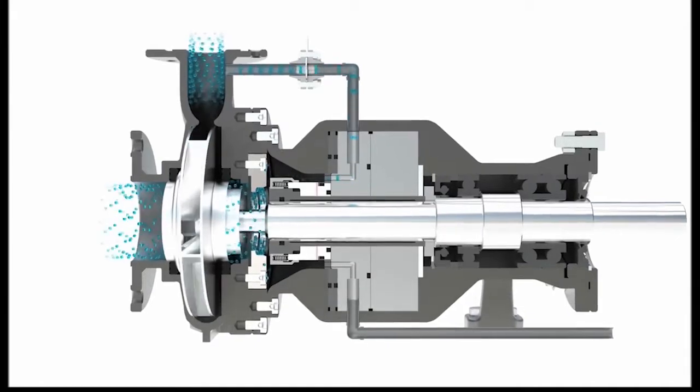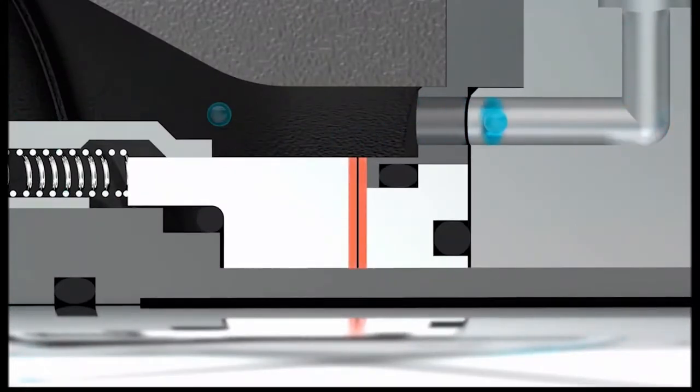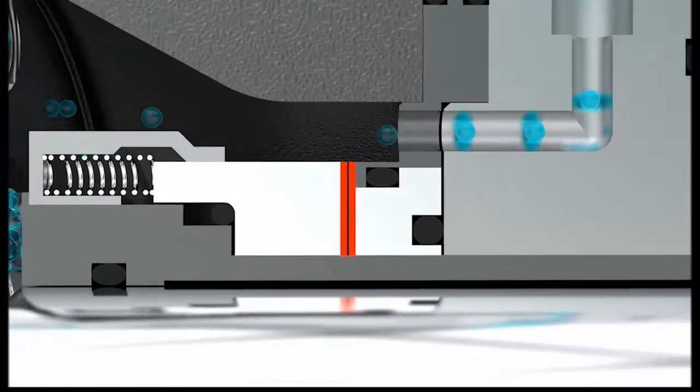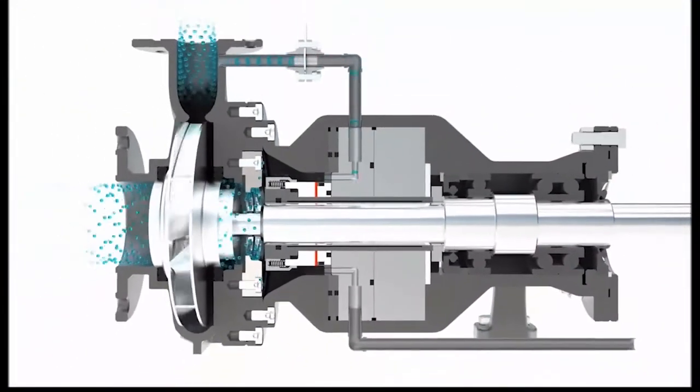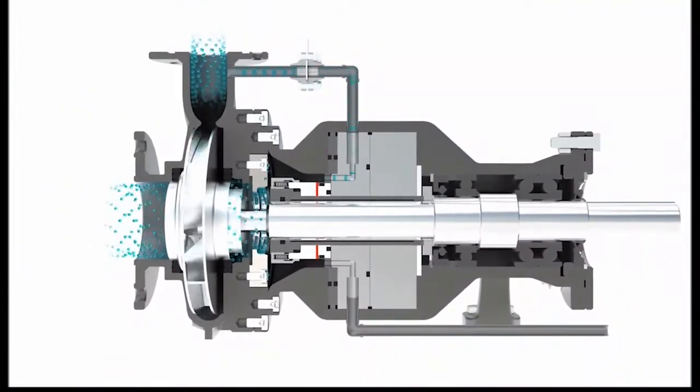This occurs when flow varies due to pressure fluctuations in the stuffing box, as it would with an orifice plate or needle valve. On the other hand, flush fluid is wasted when too much flow is provided.